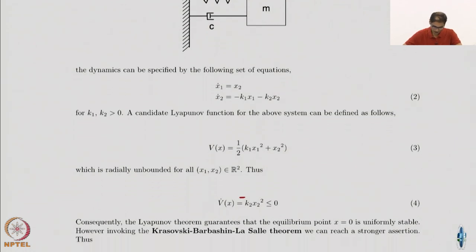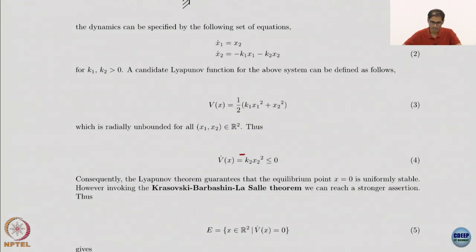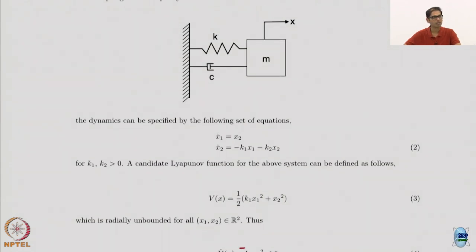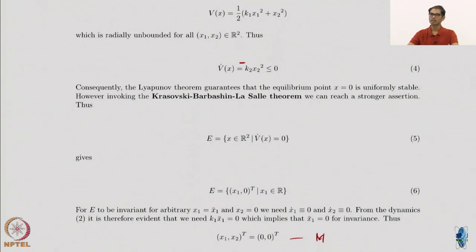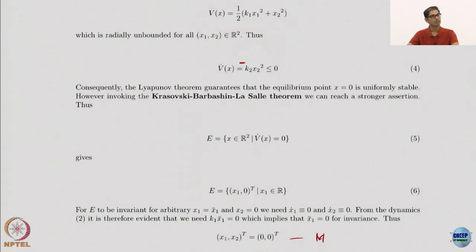Now we want to apply the Barbashin-Krasovsky-LaSalle theorem. We know the spring-mass-damper system: if you pull the mass and leave it, it's going to come to a stop unless you apply some external force. So we know this is in fact an asymptotically stable system. How do we prove that? We use the theorem: first define the set E, which is the set where V dot equals zero.